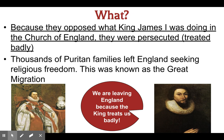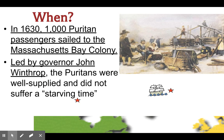We are leaving England because the king treats us badly. In 1630, about a thousand passengers sailed to the Massachusetts Bay Colony to start a colony there. These were the Puritans, led by John Winthrop. Unlike Jamestown, they were well-supplied, so they did not go through a starving time and were able to establish their colony well.